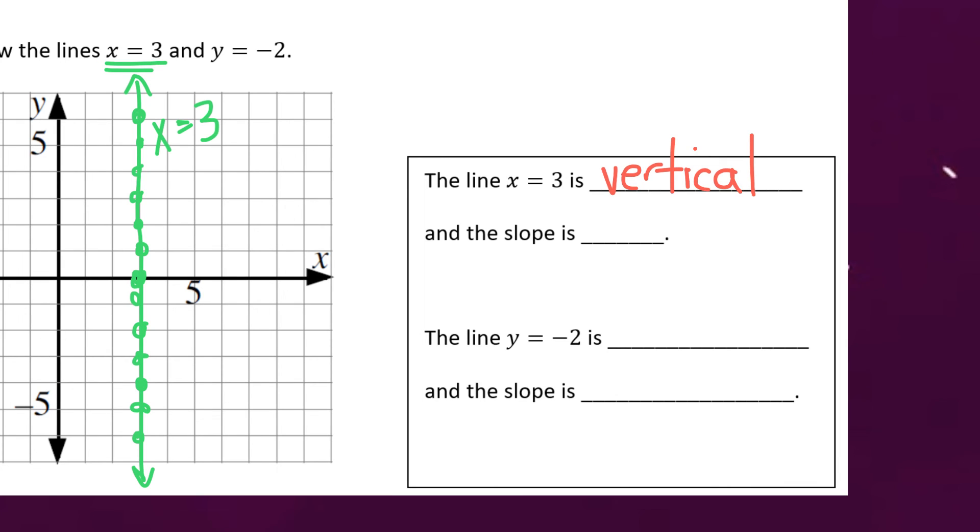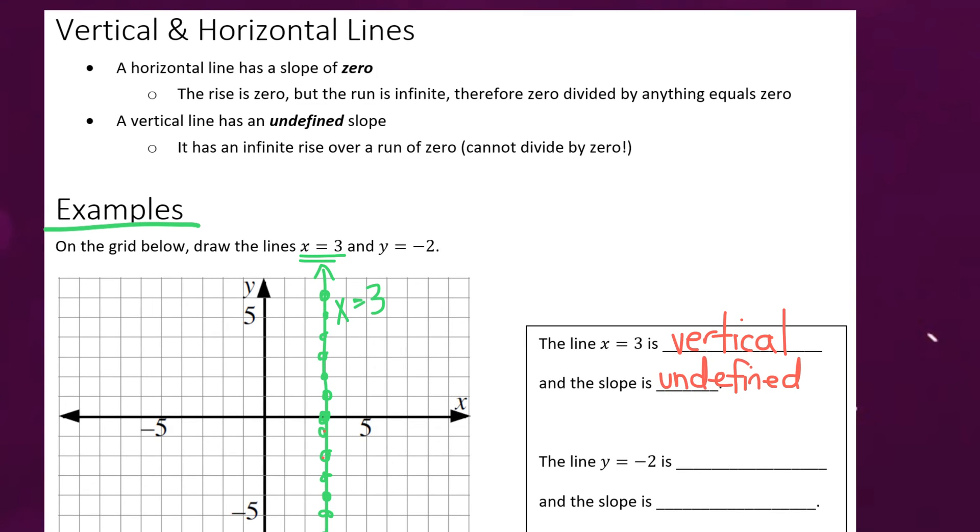So over here we can jot down that the line x equals three is vertical. And that means the slope is actually undefined. Let me explain why that's the case. We know the slope is rise over run, right? But the run here, from one point to the next, it's not running to the right or left. That means the run is zero. And we can't divide by zero. That's why we call it undefined. And that's explained in the notes up here. A vertical line has an undefined slope, and that's because we can't divide by zero.